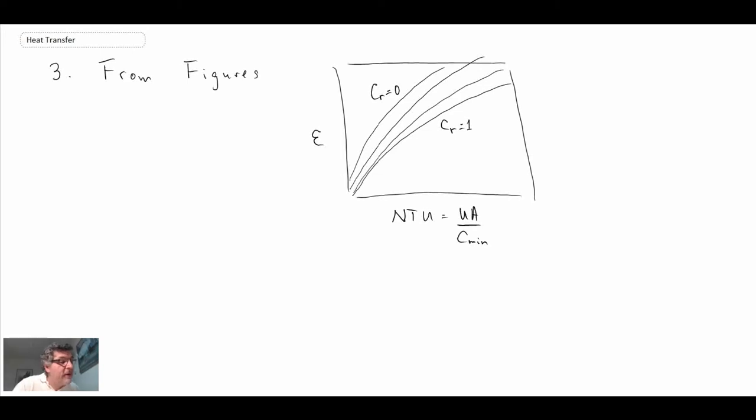What you would do is you would take the value, so we said C_R was 0.9408 and we said NTU was 1.59. You go on to the plot, you find the location, you work your way up—0.9408 is going to be pretty close there—you then go across and you read the value of epsilon or the effectiveness. From that you get 0.59.